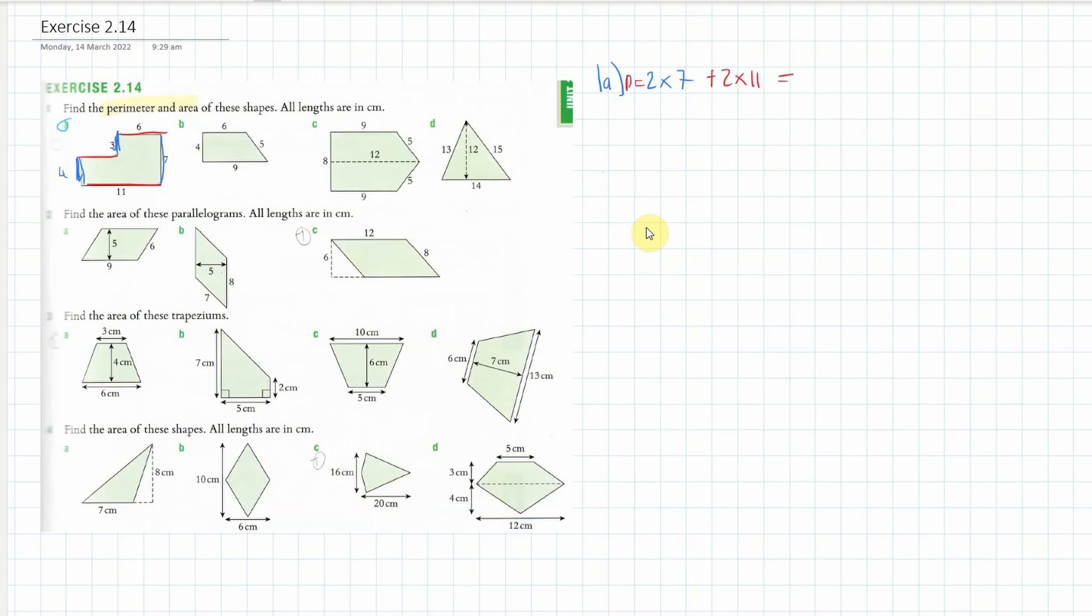All up what do we get? We get 14 plus 22 which is 36. Now let's also do the area of this. What I'm doing when I do the area is I'm going to cut the shape into two little bits, probably going to cut it like this.